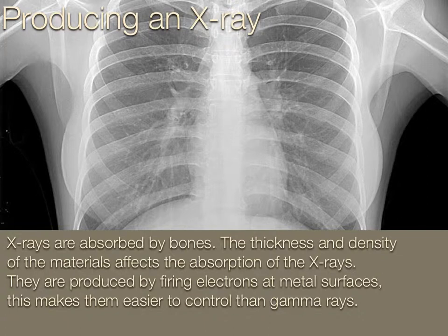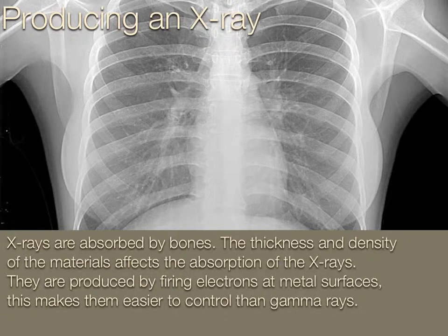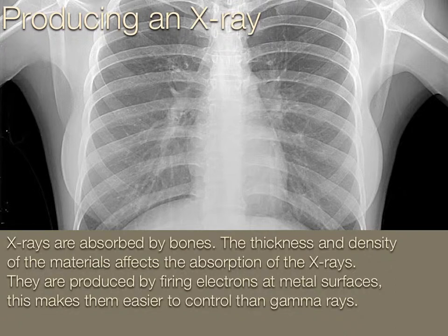Where the bone is denser, the image is lighter, and where the bone is less dense, it's more grey. X-rays are produced by firing electrons at metal surfaces, causing X-rays to be given off. This makes them a lot easier to control than gamma rays, because if we don't want X-rays, we just stop firing electrons at the metal surfaces.